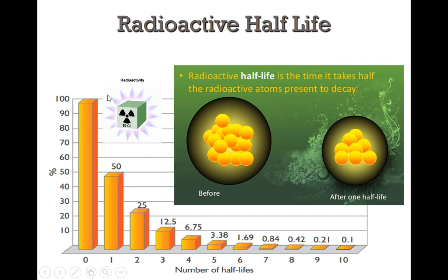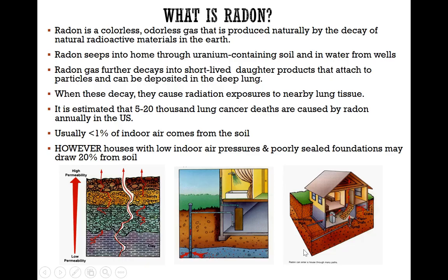Another example of radioactive half-life: it starts off at 100, after one half-life it is 50, in the second half-life it is 25, and in the third half-life it is 12.5, and so forth. As you can see, it takes multiple half-lives for a radioactive product to go from 100% down to something close to zero.